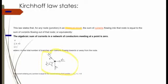The incoming currents are equal to the outgoing currents. The algebraic sum of the currents in the network of conductors meeting at a point is zero. Here, i2 and i3 are incoming currents and i1 and i4 are outgoing currents, so incoming currents equal outgoing currents.